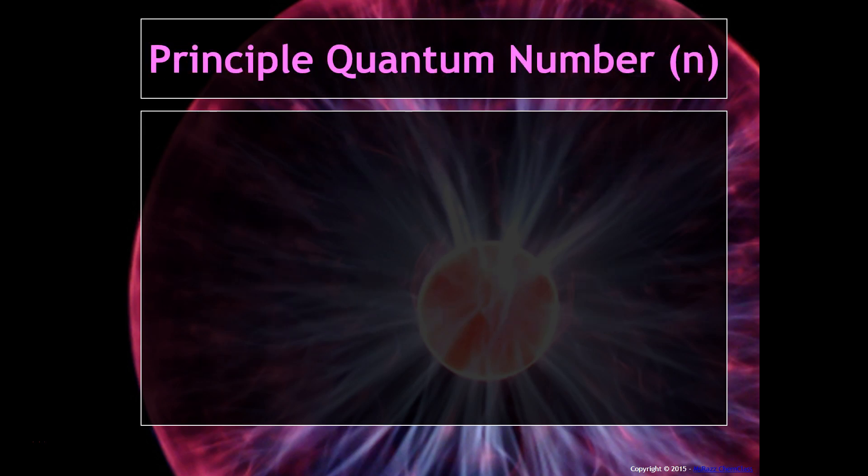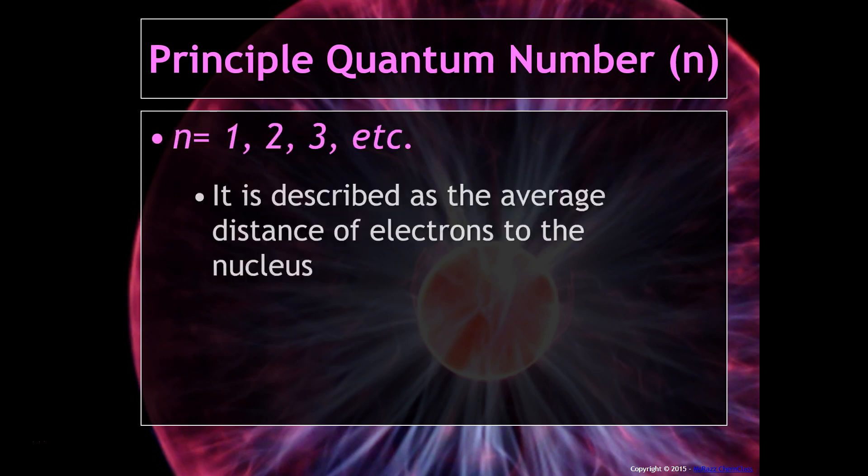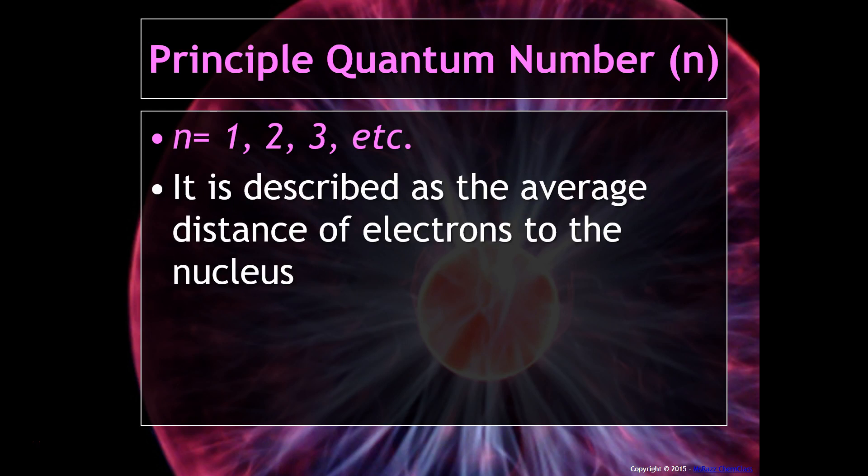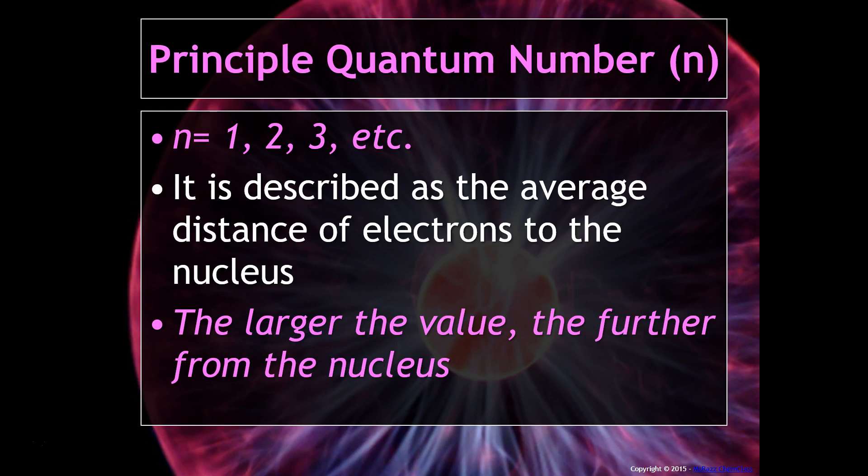The first one is the principal quantum number. It has the symbol N. N could equal one, two, three, et cetera. It is described as the average distance of the electron to the nucleus. The larger the value, the further from the nucleus these electrons are.